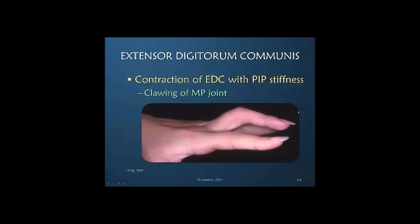Now if the PIP joint is stiff from some type of trauma, what we always see in the clinic is associated hyperextension of the MCP joint. This hyperextension occurs because we cannot effectively transmit the power to the PIP joint due to its stiffness and resistance. This prevents any power from being directed effectively to the PIP joint. So what we'd like to do is not allow this MCP joint hyperextension and drive not only the interosseous power for IP extension, but also the EDC to the PIP joint, not allowing the MCP joint to hyperextend.